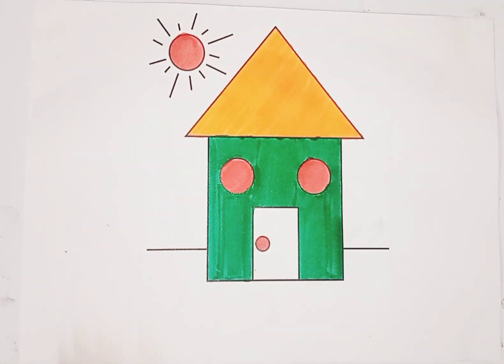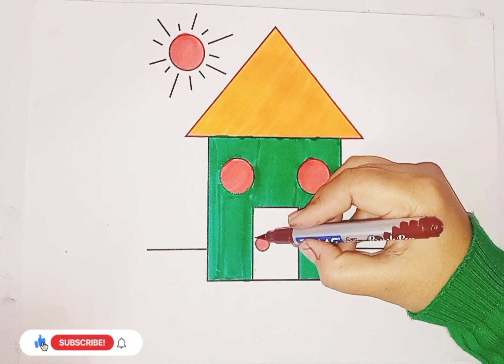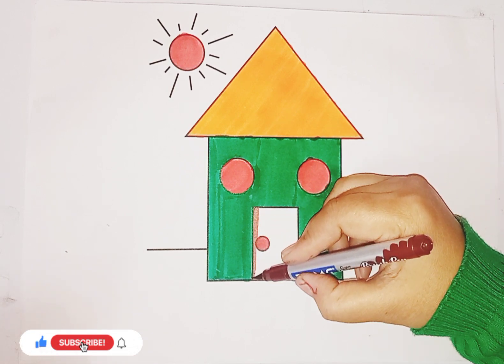Now we have a rectangle, so we use brown color in the rectangle shape. This is the shape house door.